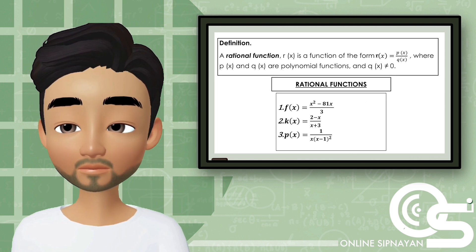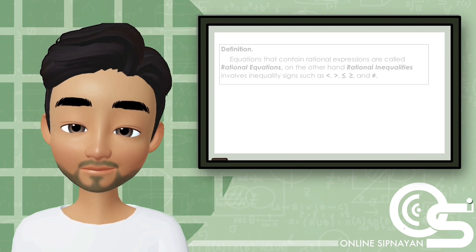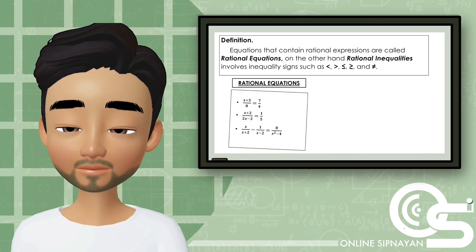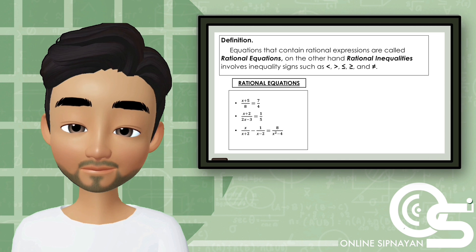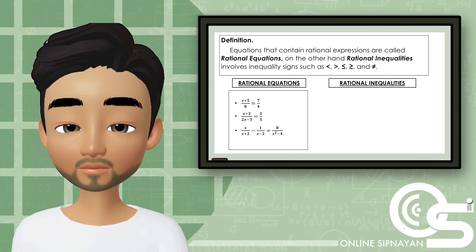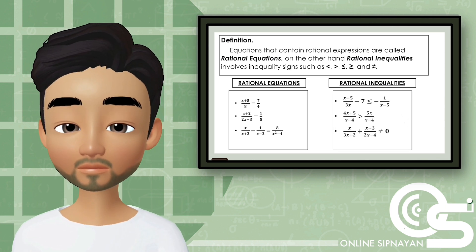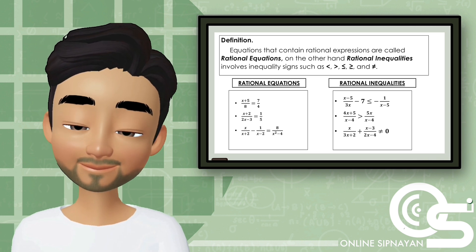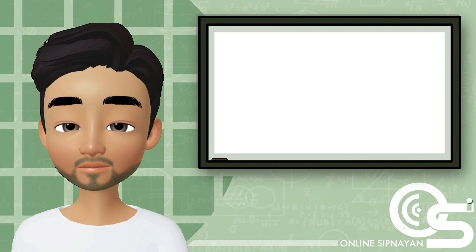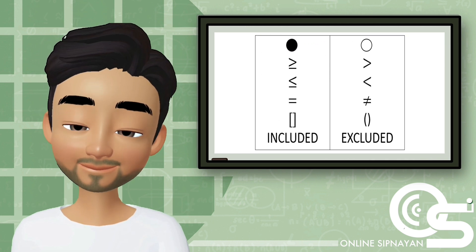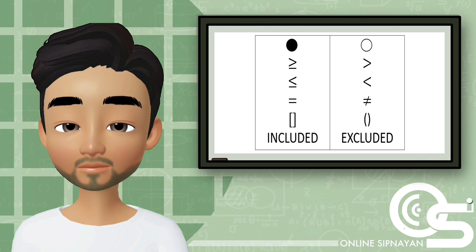The next one is rational equation, which involves rational expressions. Rational inequalities involve inequality signs such as less than, greater than, greater than or equal to, less than or equal to, and not equal. Here are the symbols and notation commonly used in an inequality, including symbols used for included and excluded values.